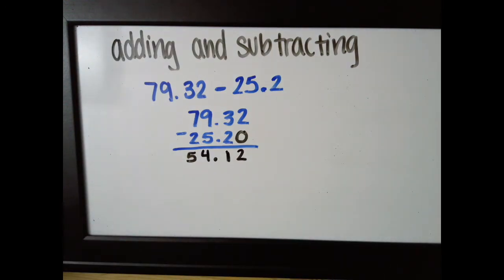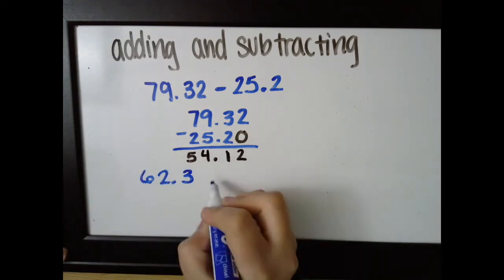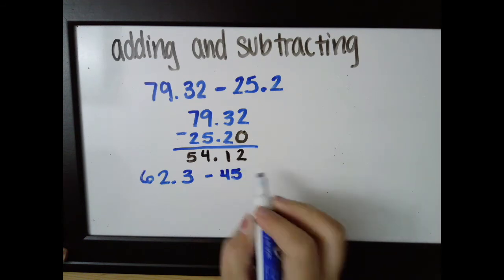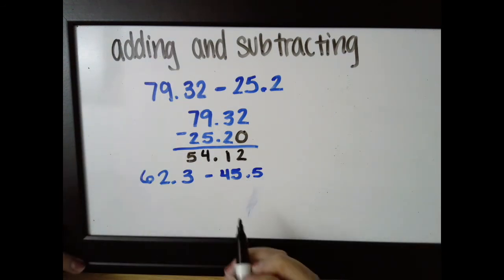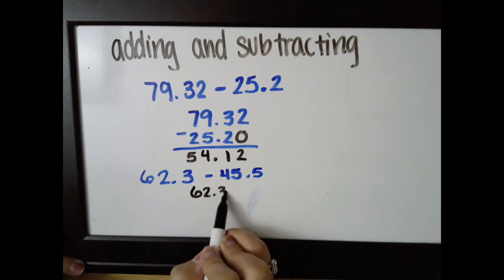We're going to do one more that does just so you have a good example of what that would look like. This time let's say it's 62.3 minus 45.5. For this one again I can't change the order when stacking. I have to do it bigger number minus smaller number.